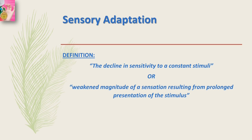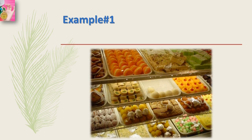The first definition is the decline in sensitivity to a constant stimulus, or you can say the weakened magnitude of a sensation resulting from prolonged presentation of the stimulus. Basically, continued presentation of the same stimulus causes the receptors to become less sensitive to that particular stimulus. This process known as adaptation occurs very rapidly when odors and tastes are involved.